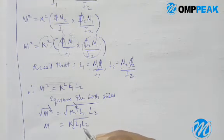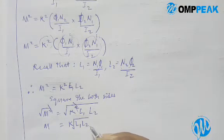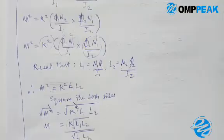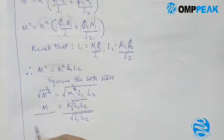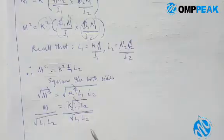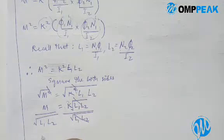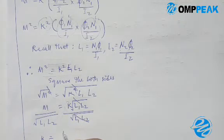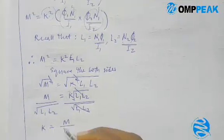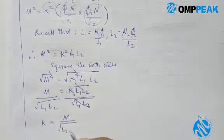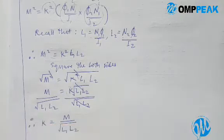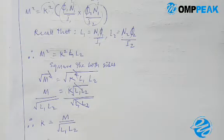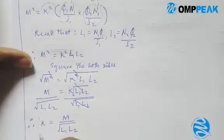So now what we are going to do is divide both sides by root L1·L2. That is the coefficient of coupling — we are looking for k. Dividing both sides by root L1·L2, this cancels, and we have k equal to M over root L1·L2. This is the formula for coefficient of coupling.